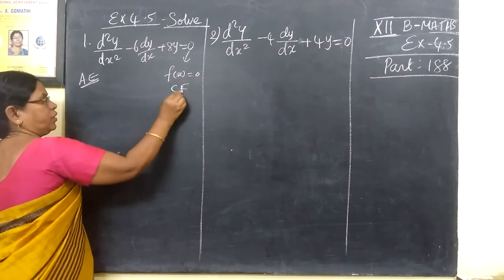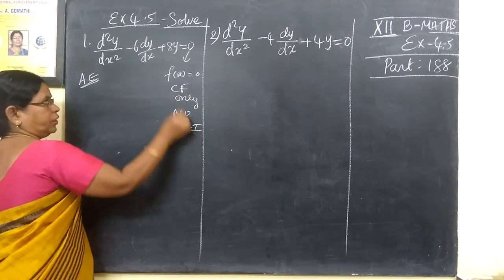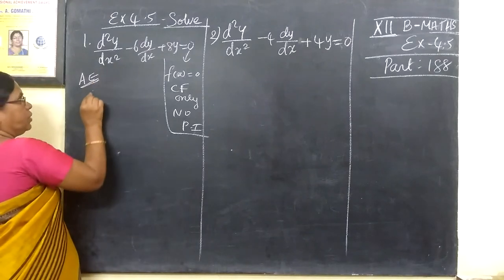Now, CF must be continuous. There is no particular interval specified. So we have to solve the equation.